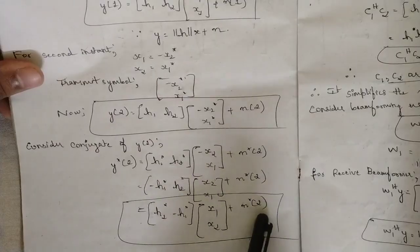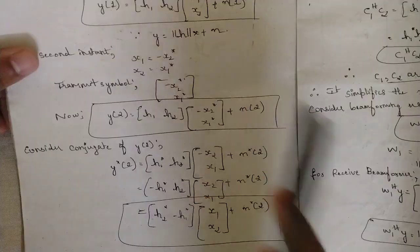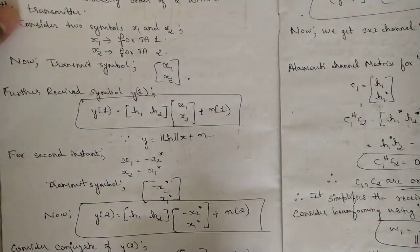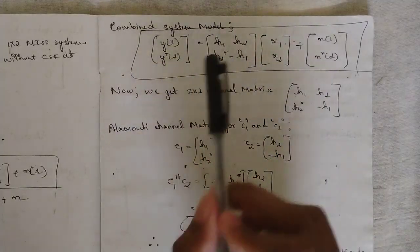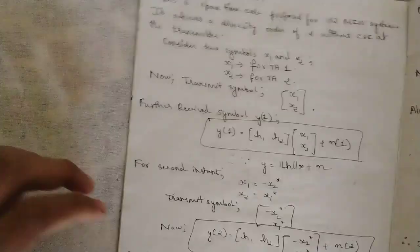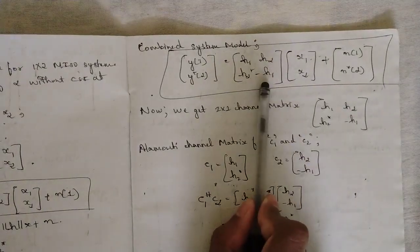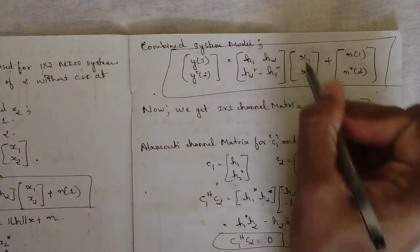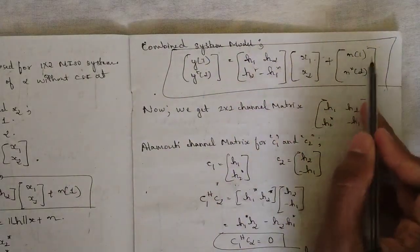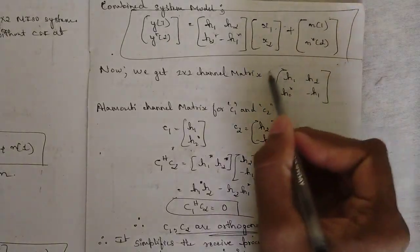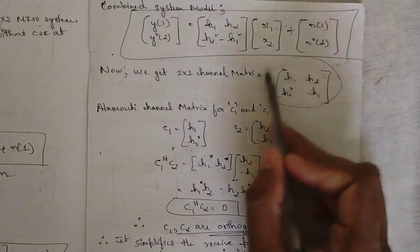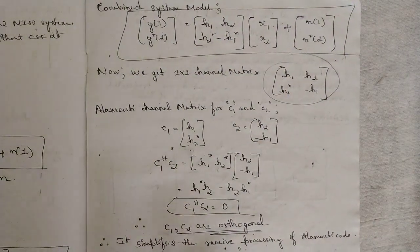So now it is of the form X one X two plus N star. With respect to this condition we got the main symbol matrix X as equal in both cases of Y of one and Y of two. Now combining the complete system model: writing the matrix Y one and Y star two equals the H matrix - which has H one, H two in the first row and H two conjugate, minus H one conjugate in the second row - multiplied by X one X two, plus N one and N star two. This is the combined system model, giving us the two cross two H matrix or channel matrix.